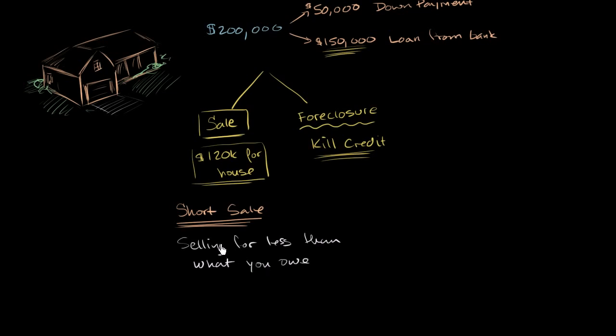And the bank doesn't have to, but the bank might, well, one, the bank would have to agree to the short sale because their loan is secured by this property that you're selling. And in most cases, the reason why you would want to do the short sale is that the bank may forgive the balance of the loan. So you try to convince bank to forgive. Convince bank to forgive the balance.